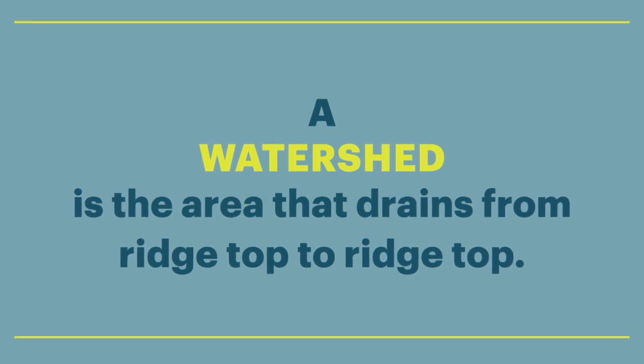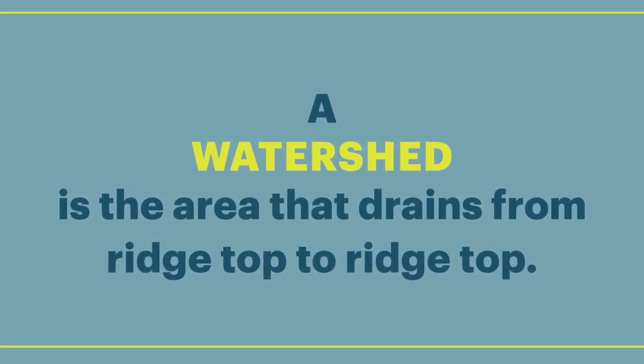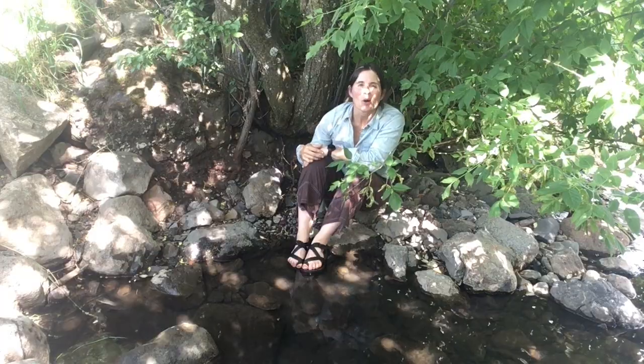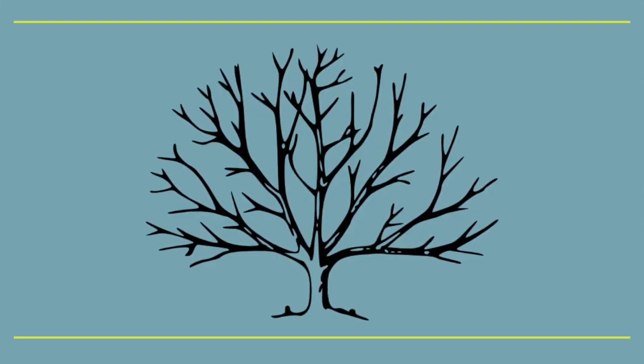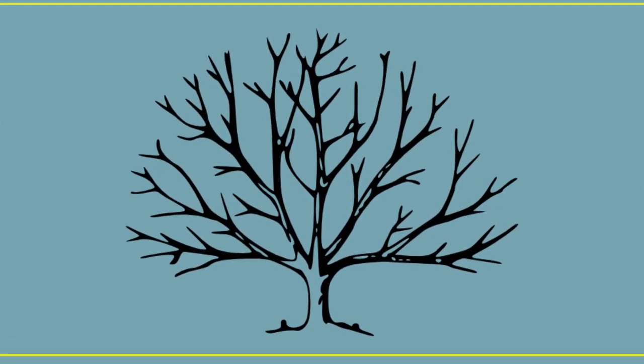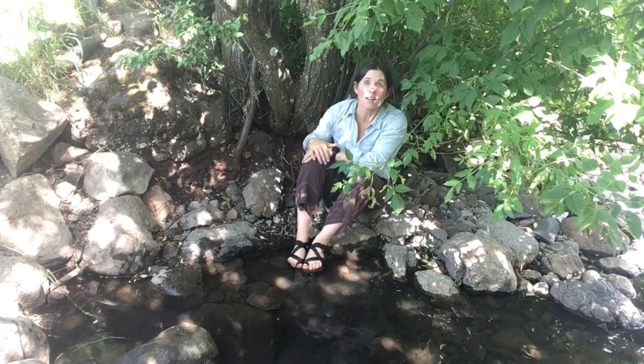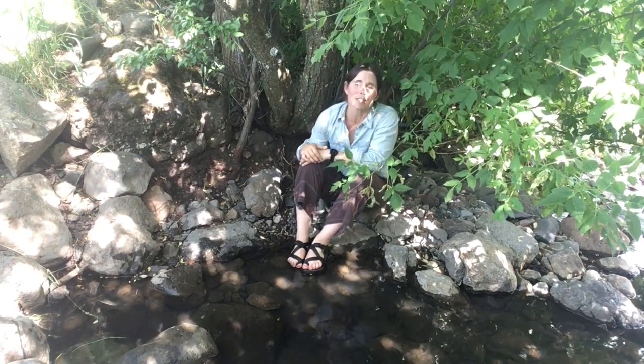As we learned from Ian Wilson's video, a watershed is the area that drains from ridge top to ridge top. Even if your ridges aren't very high, there are still places on the land that rise and fall a little bit. Regardless of where you live or travel in the world, every step you take is in a watershed. Watersheds are like branches of a tree — we might live on one branch, like the Wallowa River watershed in Ian's case, but we also live on the tree, which for Ian is the Columbia River watershed.